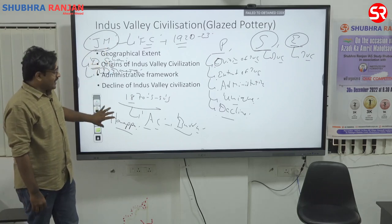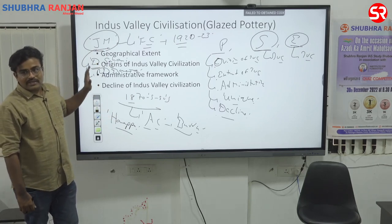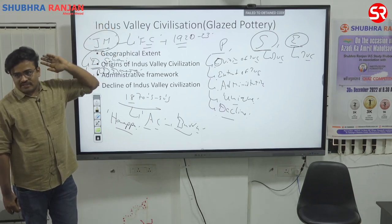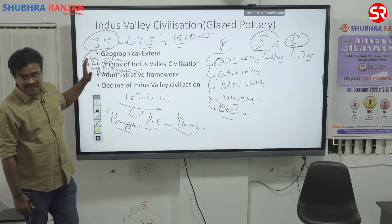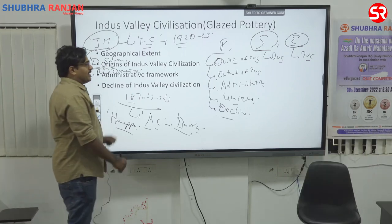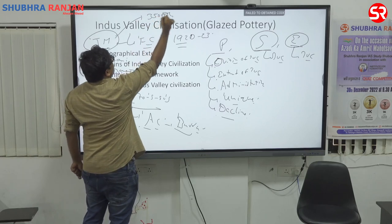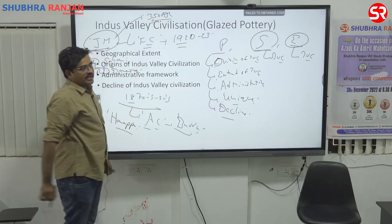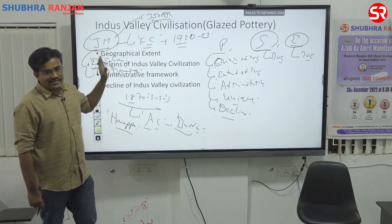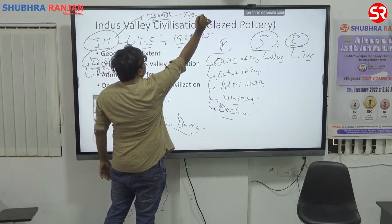Once they excavated the Harappan city and properly dated it, they came to know that this Harappan civilization is much older than the Vedic culture. John Marshall gave the dating for this civilization as 3200 BC to 2750 BC.